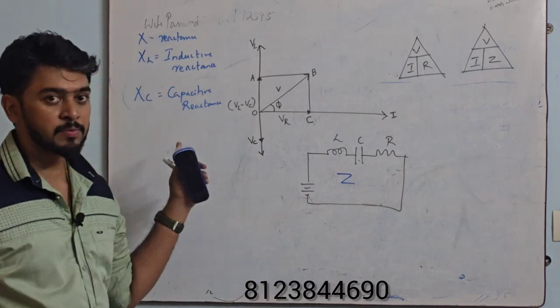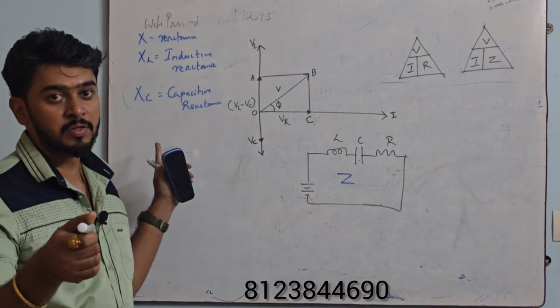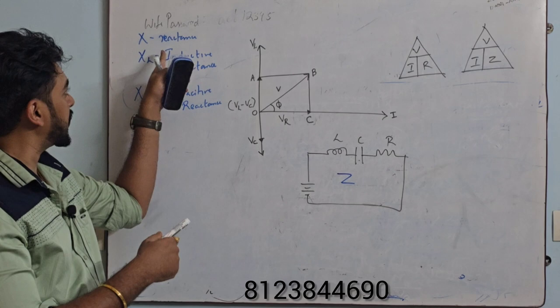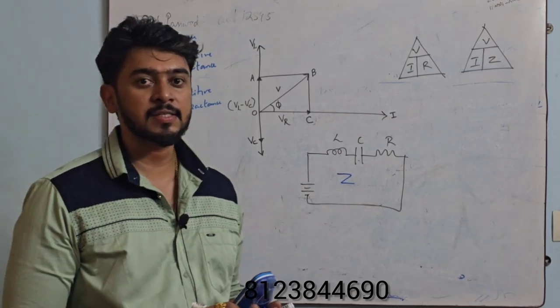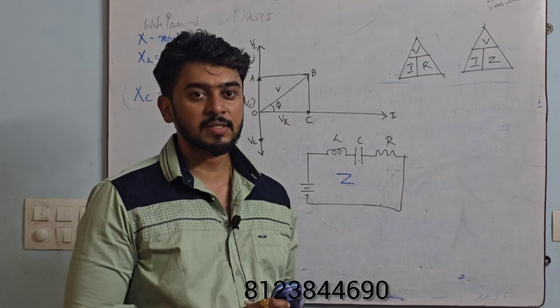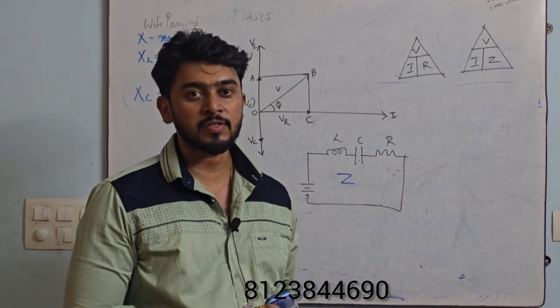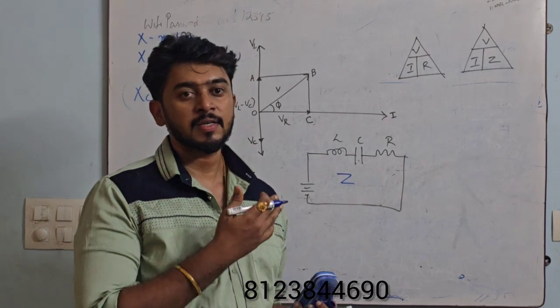Basic things we have to know before going to derive this derivation. X is reactance. XL is inductive reactance and XC is capacitive reactance. These things are very much required for us to begin this particular chapter.